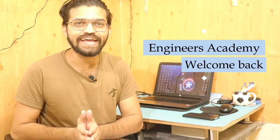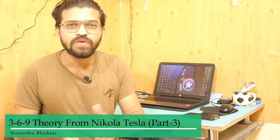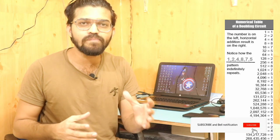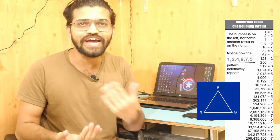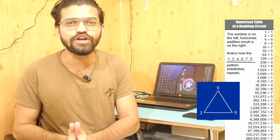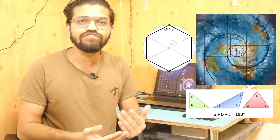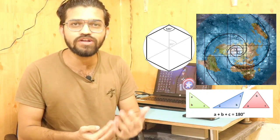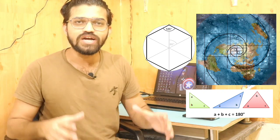Welcome back to another video of Unus Academy. In this video we are going to learn about the third part of Tesla's 369 theory. I recommend you watch the previous two parts first. The first part covers the vortex math — a pattern generated by mathematical doubling — where the numbers 3, 6, and 9 were missing. In the second part, we learned about geometrical shapes and the importance of 369 in mathematics and geometry.